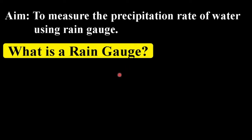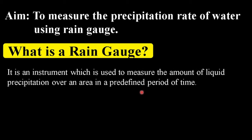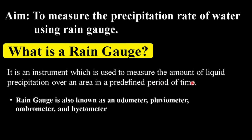First we will understand what a rain gauge is. A rain gauge is an instrument used by meteorologists and hydrologists to gather and measure the amount of liquid precipitation over an area in a predefined period of time. It is used for determining the depth of precipitation that occurs over a unit area, and with that you can measure the amount of rainfall.